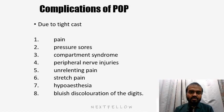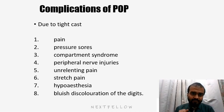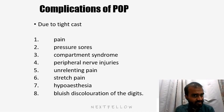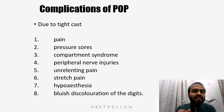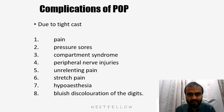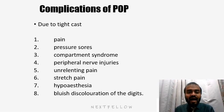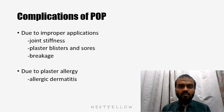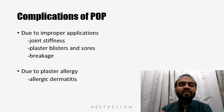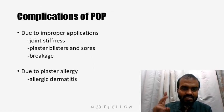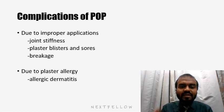The complications of plaster of Paris, especially due to a tight cast, are pain, pressure sores, compartment syndrome, and peripheral nerve injuries. Unrelenting pain out of proportion to the fracture, stretch pain (one of the cardinal signs of compartment syndrome), hypoesthesia, and bluish and whitish discoloration of the digits are key warning signs. Complications due to improper application include joint stiffness, plaster blisters, and sores and breakage of plasters. Due to plaster allergy, the patient can also complain of allergic dermatitis.